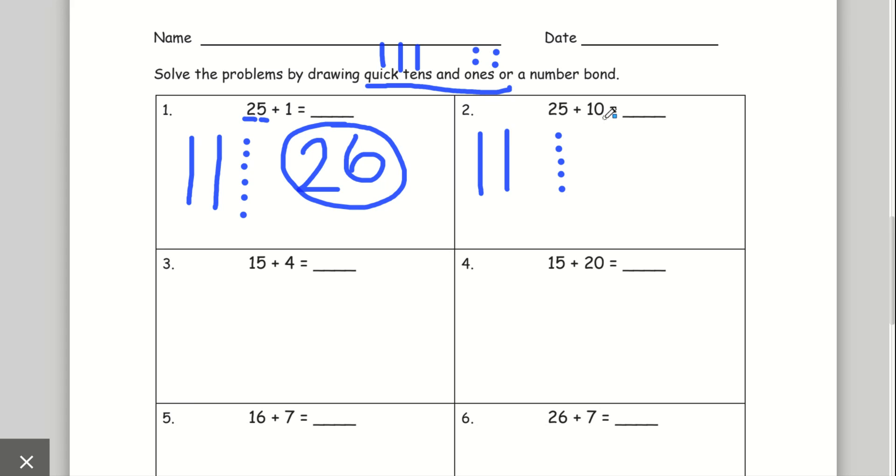That's 25. But I have plus 10 here. So I can draw one more quick ten. Now I have 1, 2, 3 tens.